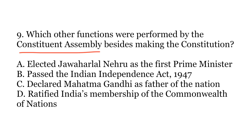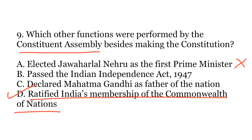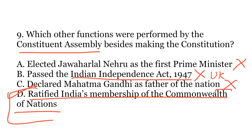The ninth question: which other functions were performed by the Constituent Assembly besides making the constitution? Options: A — elected Jawaharlal Nehru as the first Prime Minister; B — passed the Indian Independence Act 1947; C — declared Mahatma Gandhi as Father of the Nation; or D — ratified India's membership of the Commonwealth of Nations. The correct answer is D. The assembly did not elect Nehru as PM — that was done after the first general elections. The Indian Independence Act was passed by the UK Parliament, not the Indian assembly. Mahatma Gandhi was never officially declared Father of the Nation.